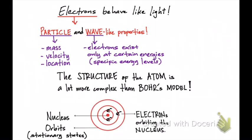Here's a diagram of Bohr's model of the atom, where you have the nucleus at the center containing protons and neutrons. Then you have these orbits or stationary states that are fixed and contain fixed energy — that's why you can also call them energy levels, because they have a specific energy. Electrons reside within these energy levels or stationary states and orbit the nucleus.